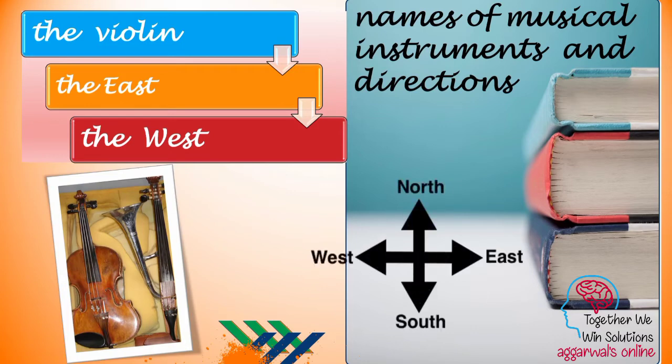Article 'the' is used before names of musical instruments and directions. As you can see in the slide, 'the North', 'the South', 'the West', and 'the East' are examples of directions.